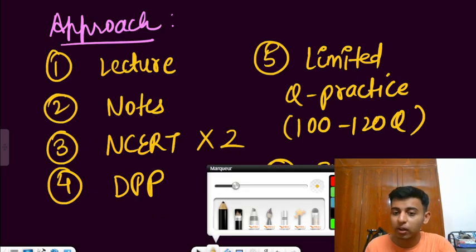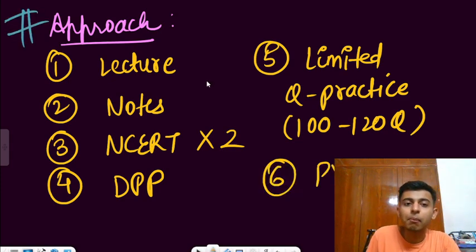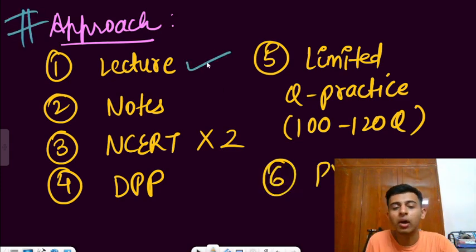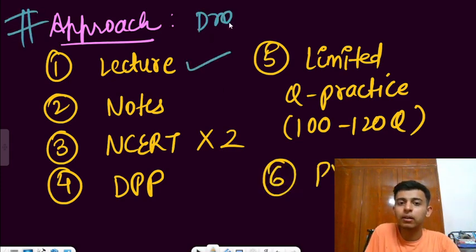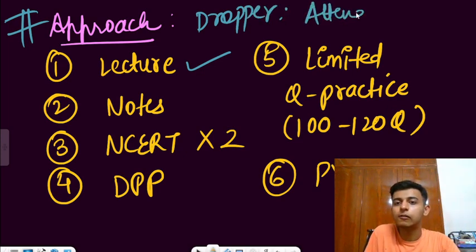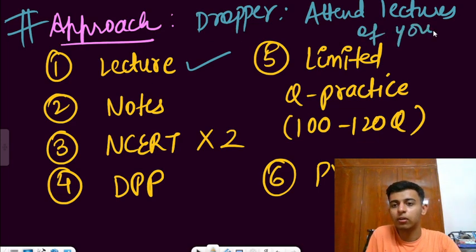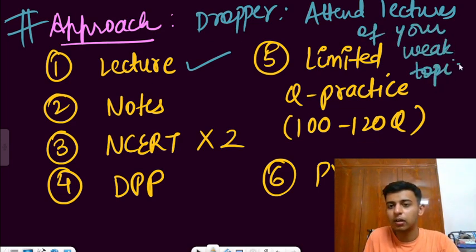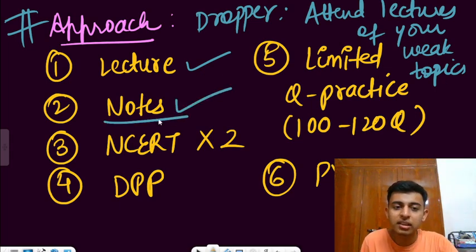So for tackling all these three type of questions, we need NCERT. What should be the approach in biology? Please remember that what should be your approach. Number one thing, you need to attend your lecture, be it online or offline. If you are a dropper, then attend lectures of your weak topics only.